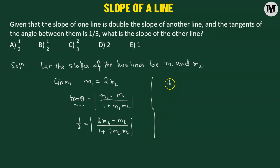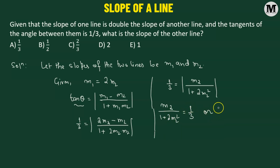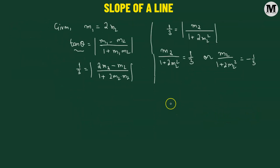We have 1 over 3 equals the absolute value of m2 over 1 plus 2 times m2 squared, since 2m2 minus m2 simplifies to m2. Because of the absolute value, this gives us two cases: m2 divided by 1 plus 2m2 squared equals 1 third, or m2 over 1 plus 2m2 squared equals negative 1 third. Let's solve each of these two equations.